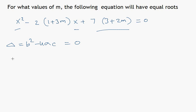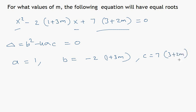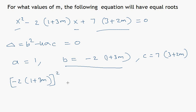For this equation, a equals 1, b equals negative 2 times the quantity 1 plus 3m, and c equals 7 times the quantity 3 plus 2m. Now let us find b squared minus 4ac: b squared is negative 2 times 1 plus 3m, all squared, minus 4 times 1 times 7 times the quantity 3 plus 2m.